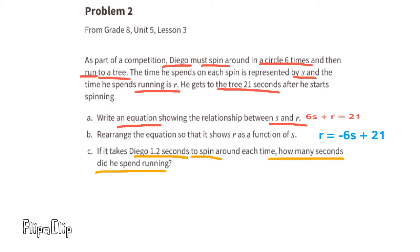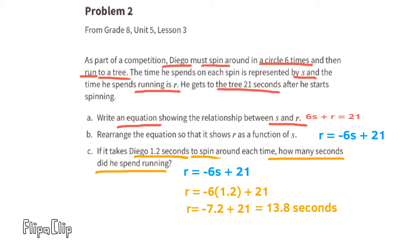Part c: if it takes Diego 1.2 seconds to spin around each time, how many seconds did he spend running? To solve this, substitute S with 1.2 seconds. Negative 6 times 1.2 equals negative 7.2. Then 21 minus 7.2 equals the running time. The running portion would have taken 13.8 seconds.